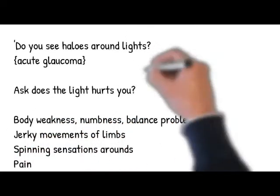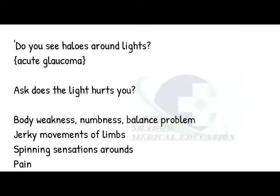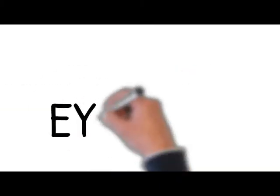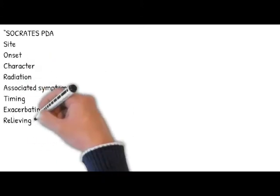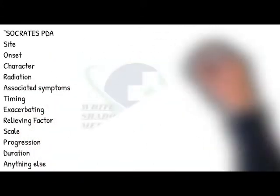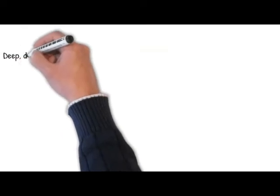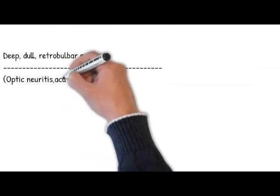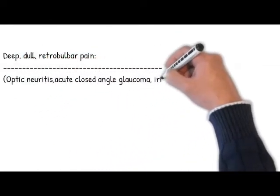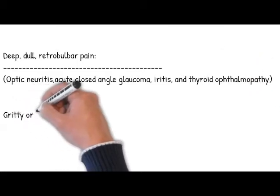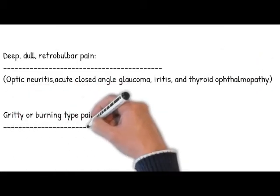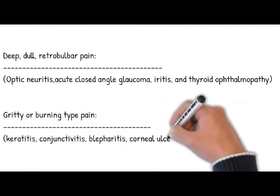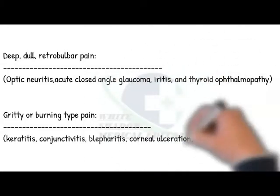If there is any pain associated with the eyes, ask about it using SOCRATES. Remember that deep, dull retrobulbar pain, characteristically worse on moving the eye, is associated with optic neuritis, acute closed-angle glaucoma, iritis, and thyroid ophthalmopathy. Whereas gritty or burning type pain is caused by keratitis, conjunctivitis, blepharitis, corneal ulceration, and thyroid ophthalmopathy.